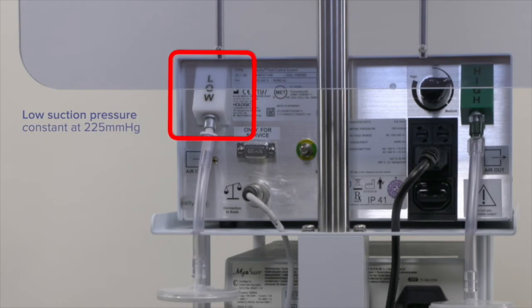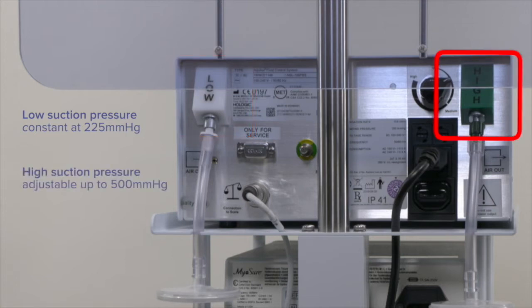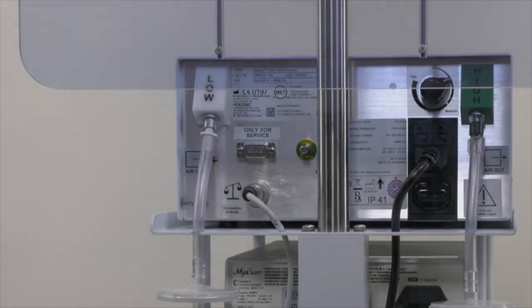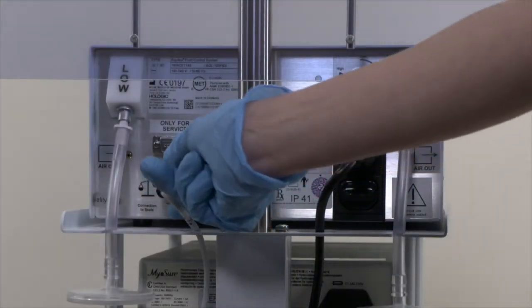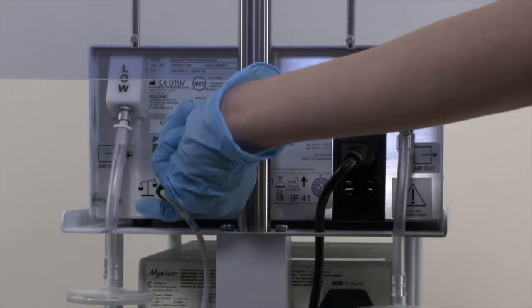The low suction pressure is set to 225 mmHg constant pressure. The high suction pressure is adjustable up to 500 mmHg by rotating the dial and can be utilized during a Myershaw procedure to improve cutting efficiency. Check the scale connector is secure and finger tighten.